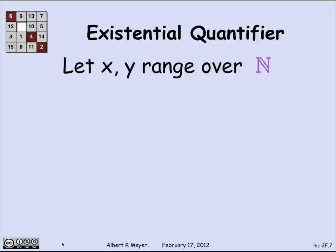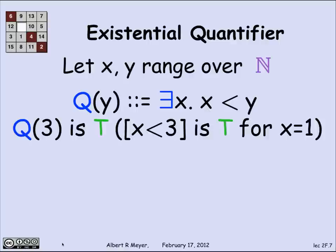So let's do a little practice with existential quantifiers. Let's agree that the variables x and y will range for this example over the non-negative integers. And let's consider the following predicate about y that says that there's some x that's less than y. Q(y) is there exists an x that x is less than y. What about Q(3)? Q(3) is saying that there is an x such that x is less than 3. Well, an example of such an x is 1.